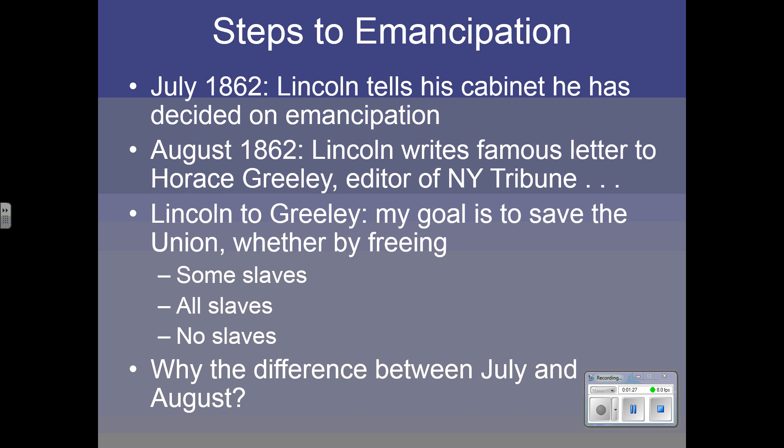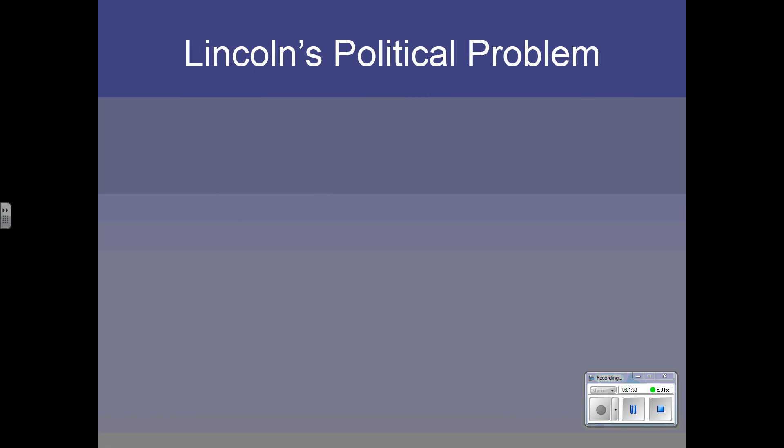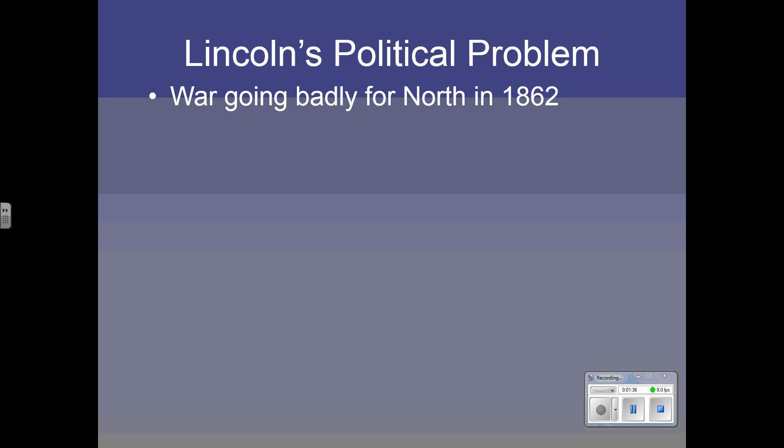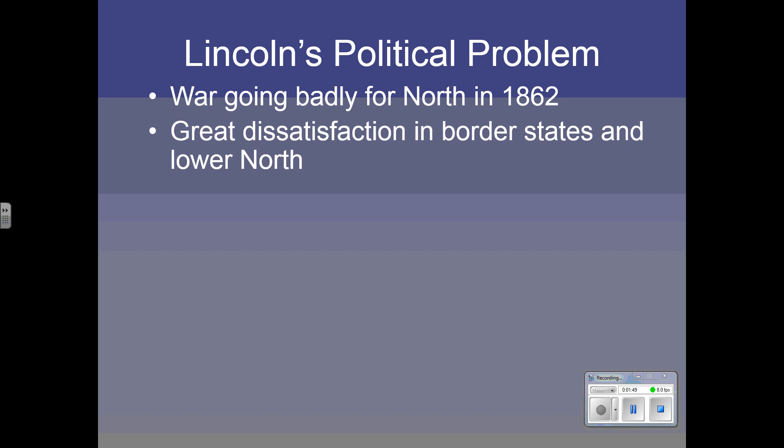Let's look into the situation that he faced. He had a problem. The war was going badly for the North in 1862, and there was a lot of grumbling in the North about the war effort. There was especially a lot of dissatisfaction in the border states and in the lower North — Kentucky, Maryland, Missouri, and Delaware, which were slave states that were in the Union, as well as the southern parts of some northern states like southern Illinois, Indiana, and Ohio.